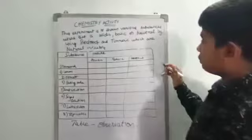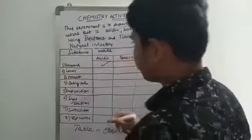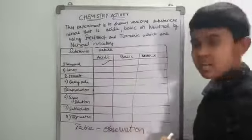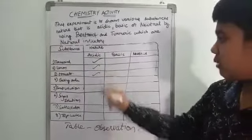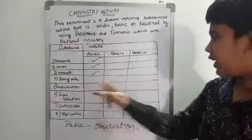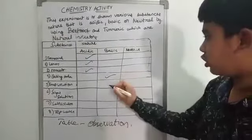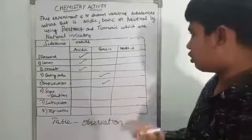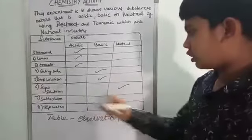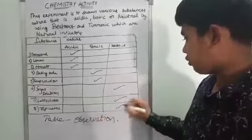So our observation is: tamarind juice — acidic in medium. Lemon — also acidic in medium. Tomato — acidic in medium. Baking soda — basic in medium. Soap solution — basic in medium. Sugar solution — neutral. Salt solution — neutral. And tap water — neutral.